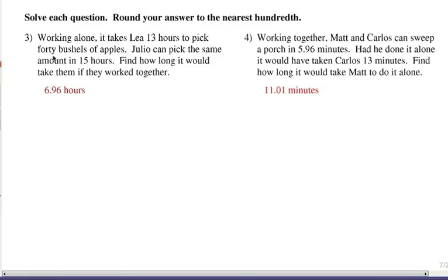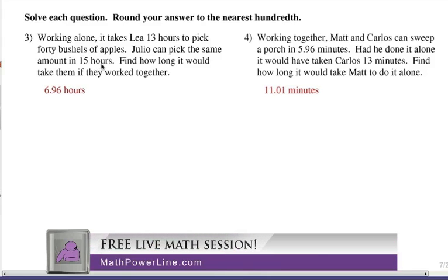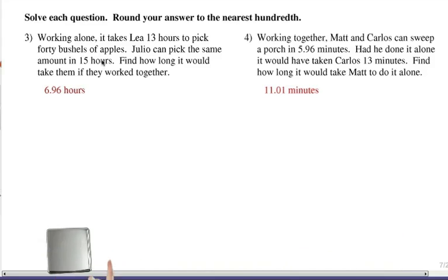Working alone, it takes Leah 13 hours to pick 40 bushels of apples. Julio can pick the same amount in 15 hours. Find how long it would take them if they worked together. So this is an example of a work algebra word problem. You can see the answer yourself, about seven hours. Now, to the nearest hundredth would be 6.96. So if you had trouble getting that, let's check it out.